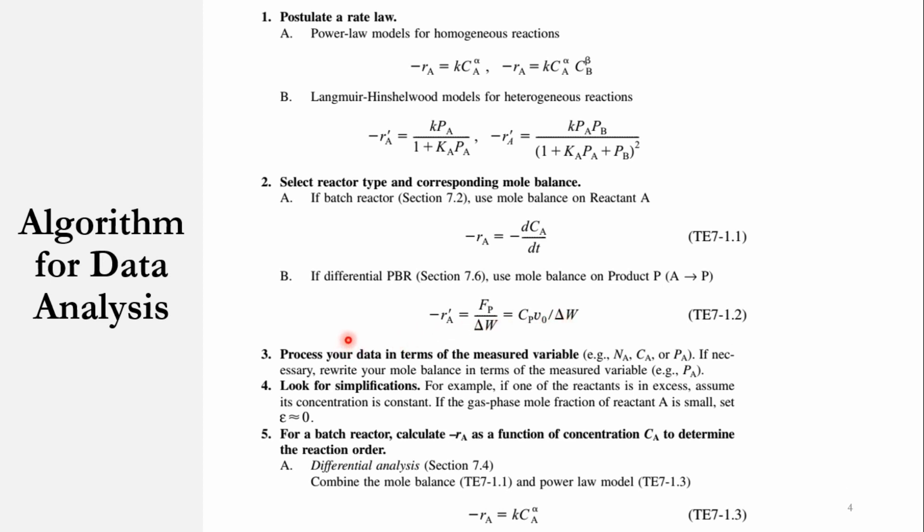The third step is to process your data in terms of the measured variable. Obviously, the measured variable could be the number of moles, could be the concentration, or could be the partial pressure. If you remember our previous lectures, specifically related to chapter number 3, where we had said that heterogeneous systems are represented usually in terms of partial pressures, but that can be converted in terms of concentration as well. So if necessary, rewrite your mole balance in terms of the measured variable such as partial pressure.